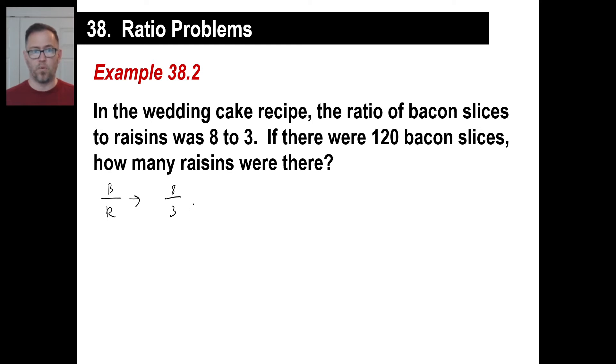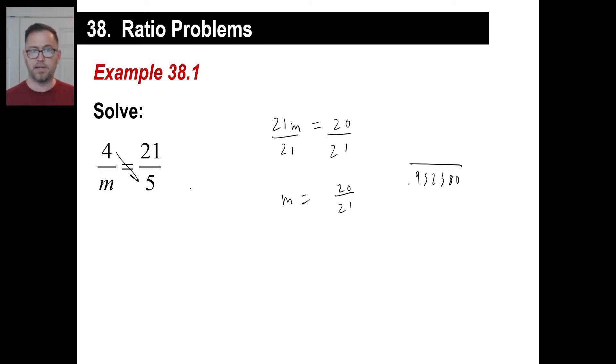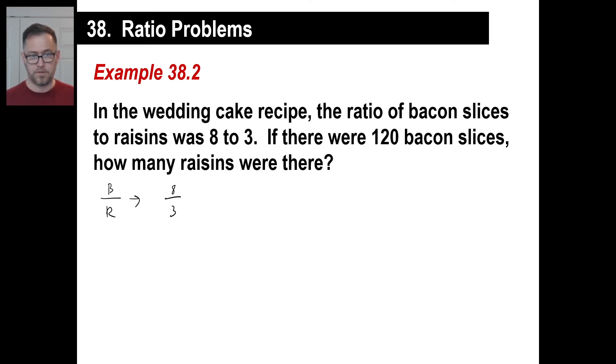And to solve this, we know we're going to have to get two fractions that equal each other. We've already got 8 to 3 as our ratio. So we're just going to put equals, stick a fraction, and fill in one of the blanks, and we'll cross multiply to find out what the fourth one is. 120 bacon slices, that matches with the top because that's bacon. So that goes right there, 120.